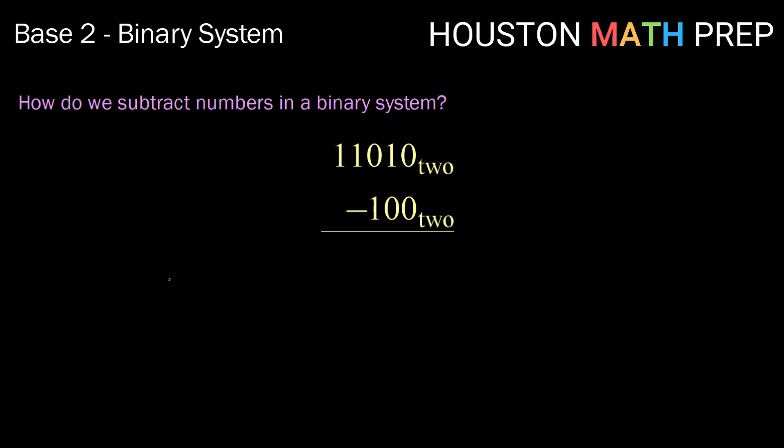For subtraction, this works the same as in base 10, only we borrow groups of 2. Starting on the right, 0 minus 0 is 0, 1 minus 0 is 1. In the next place value, we have 0 minus 1, but we can't do that, so we borrow a group of 2. Now 2 minus 1 is 1. We're out of digits to subtract, so we bring down what's left. Our answer to this subtraction problem is 10110 in base 2.